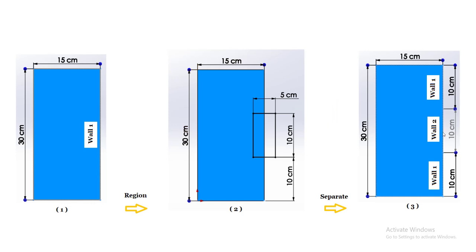Let's start with a simple 2D geometry. As you can see, I have a rectangle with a height of 30 cm and a width of 15 cm, and I want to separate wall number one — the right wall boundary condition — into two different wall boundary conditions: wall one and wall two. The Y-minimum coordinate of this region is 10 cm and the Y-maximum coordinate is 20 cm.